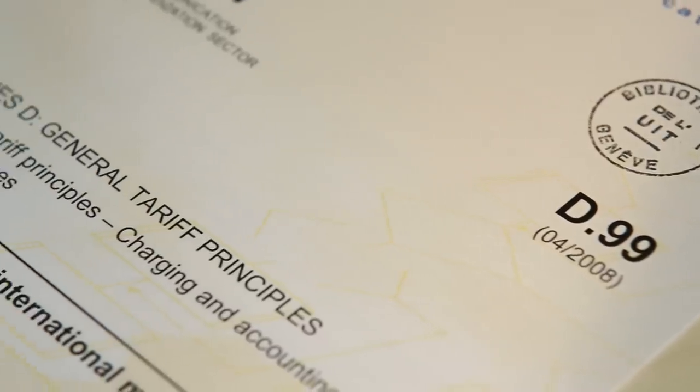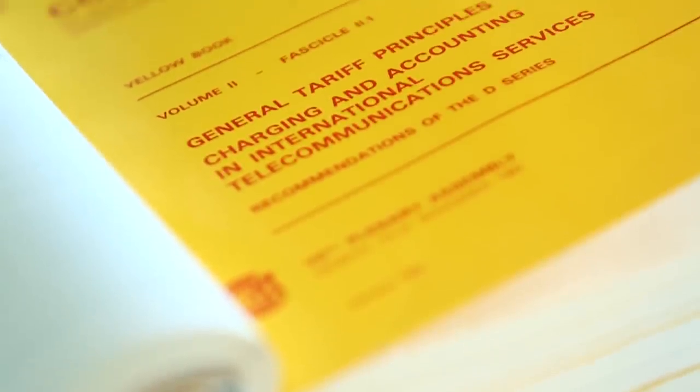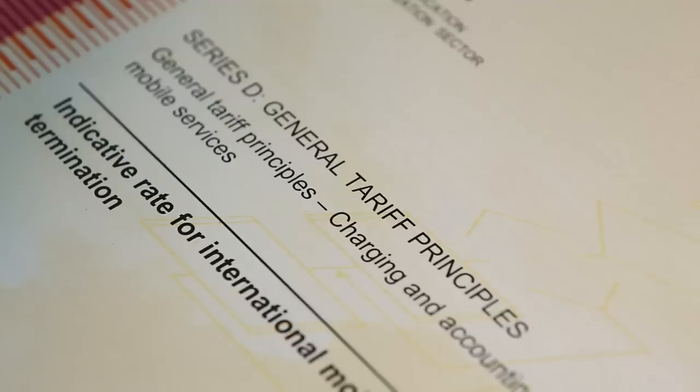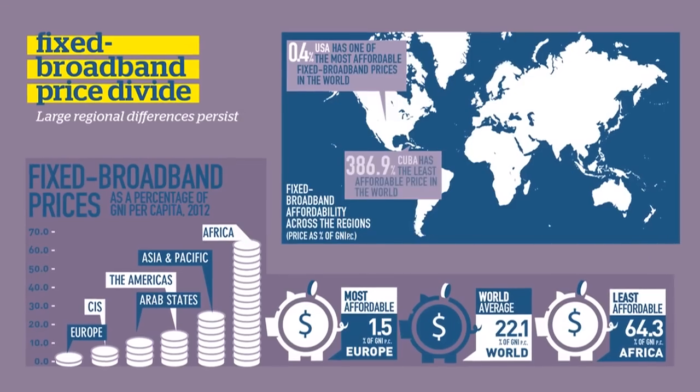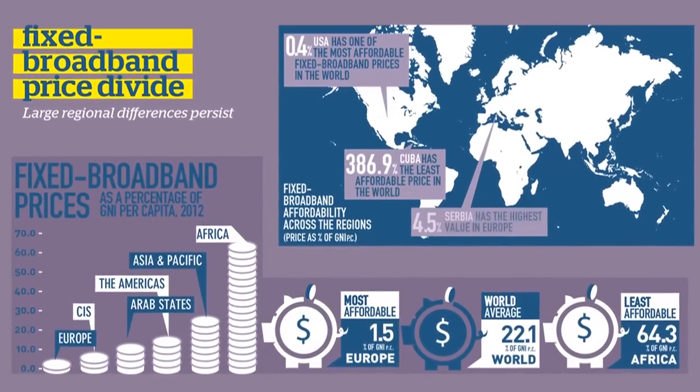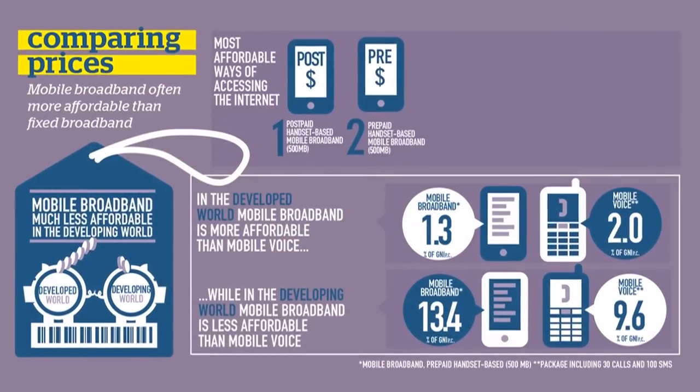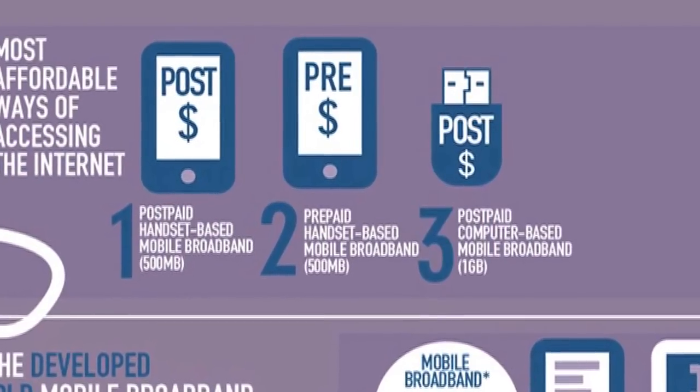Study Group 3, or SG3 as it's known, is home to the series of standards called the D-Series recommendations. It's responsible for tariff and accounting of international telecom services, costing methodologies, and related economic and policy issues. The mandate of the group is fairly broad. The standardization sector of the ITU has a number of technical study groups working on a wide variety of subjects, from e-health to cloud computing. But Study Group 3 is the only study group working on policy and economic issues, and it's also the only study group working on the financial aspects of telecommunications.